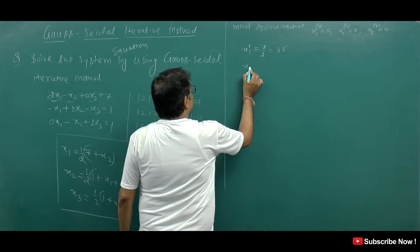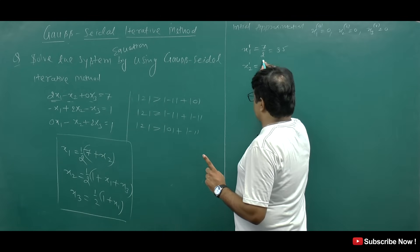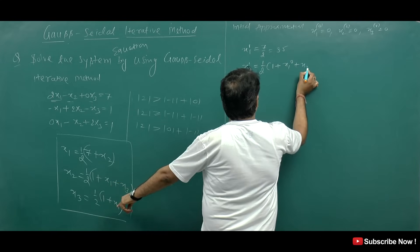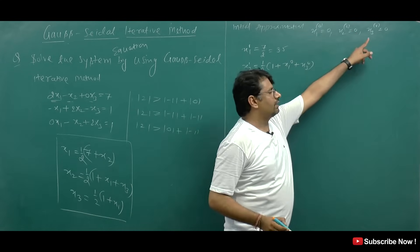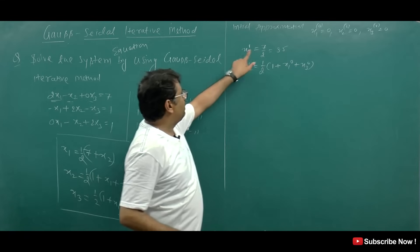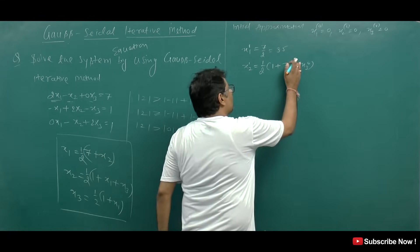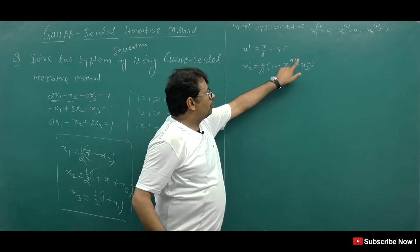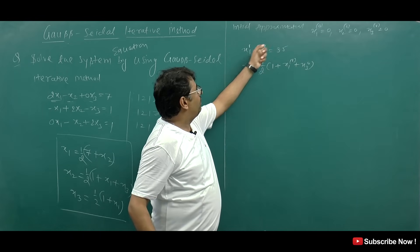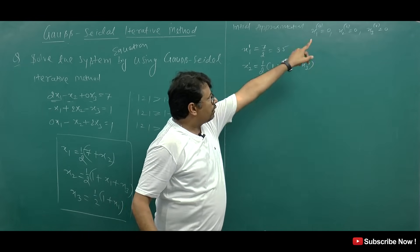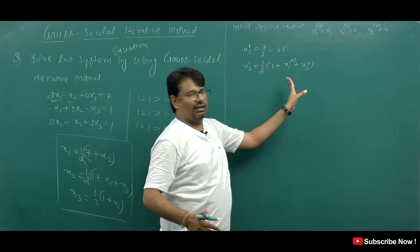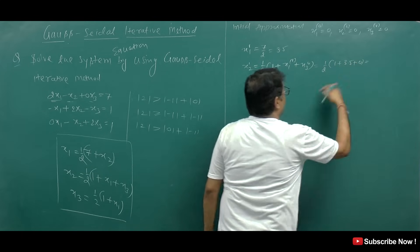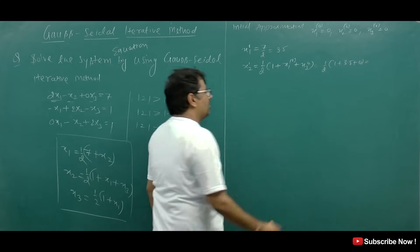Now in the Gauss-Seidel method, we use the latest computed value immediately. So for x2 in the first approximation, we use the newly computed x1 = 3.5 and x3 = 0: x2 = (1 + 3.5) / 2 = 4.5 / 2 = 2.25. Then for x3, we use the already computed first approximation x1 = 3.5: x3 = (1 + 3.5) / 2 = 4.5 / 2 = 2.25. This completes our first approximation.